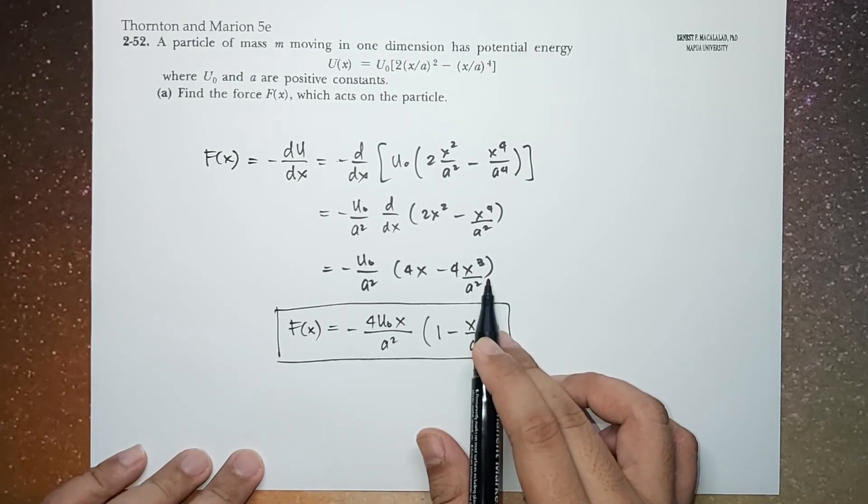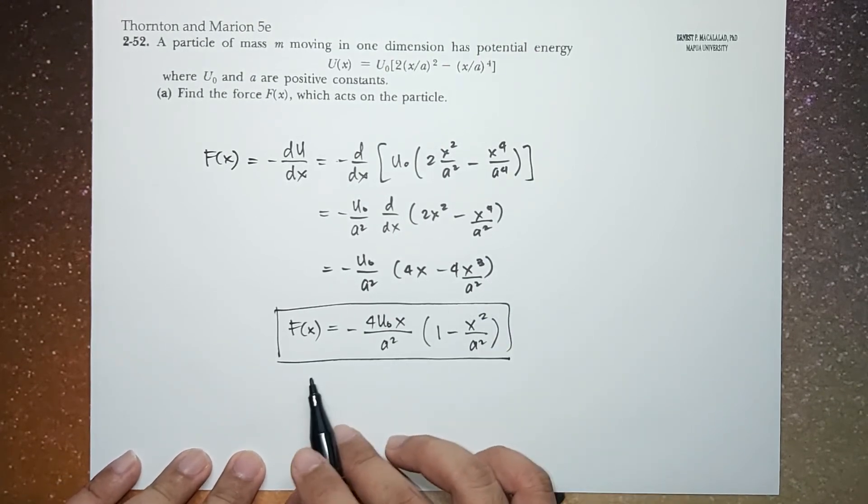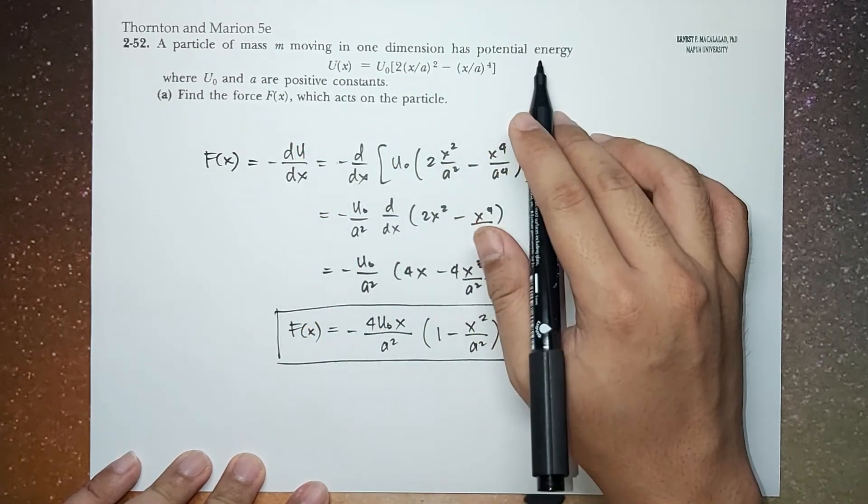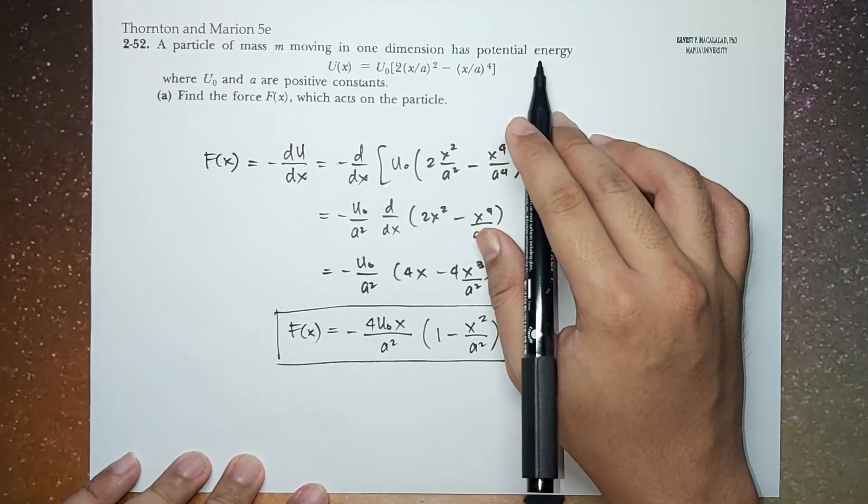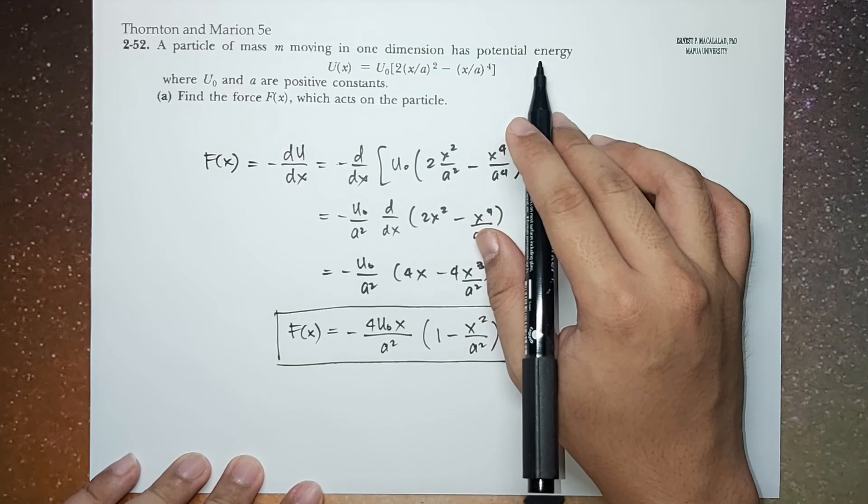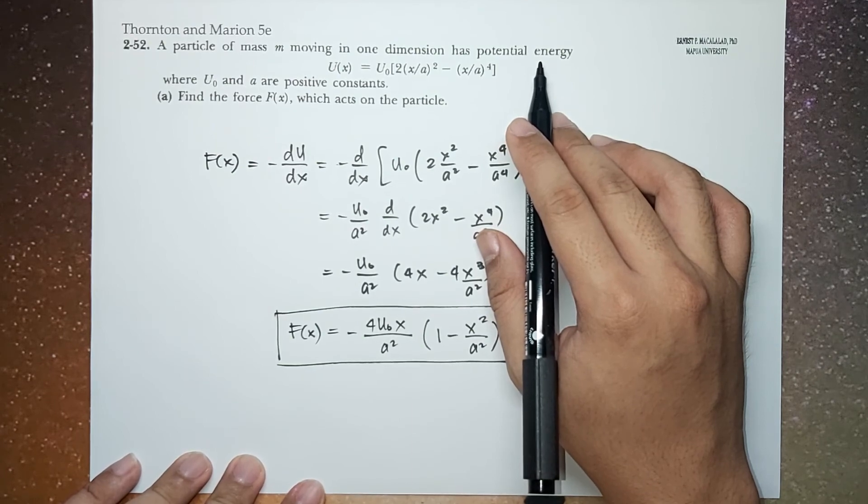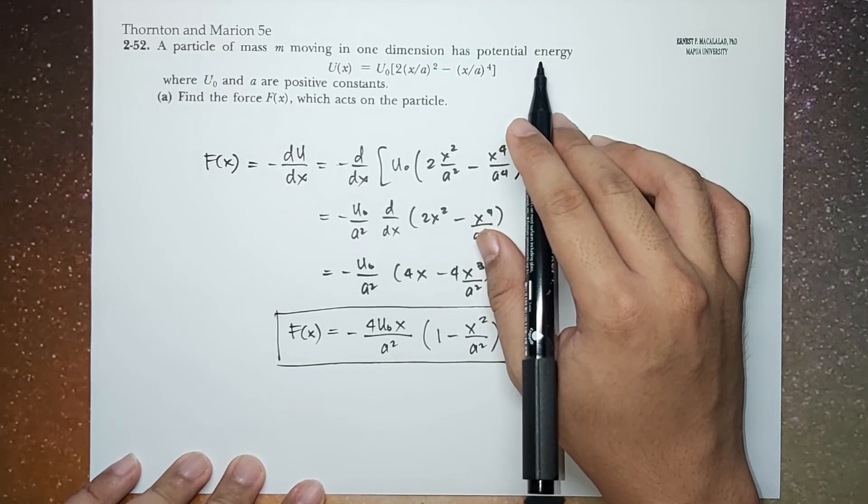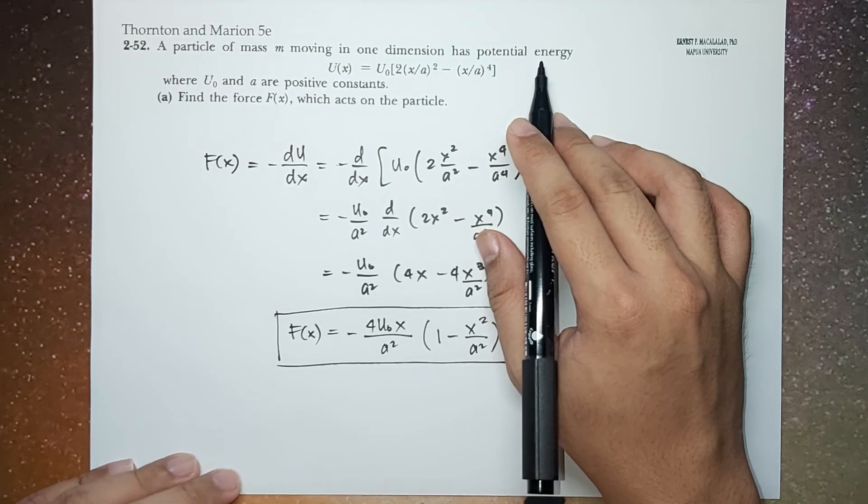So in the next video, we're going to sketch the potential energy U and see where the equilibrium positions are. And we're going to determine if those equilibrium positions are stable or unstable.